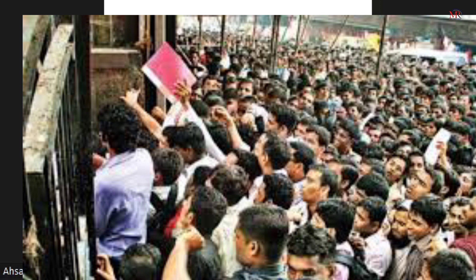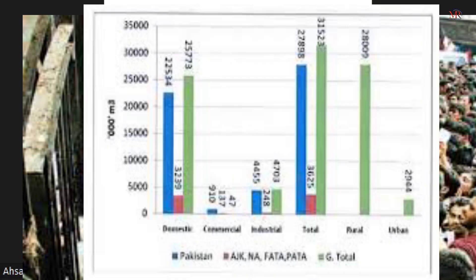Regarding transmission and distribution losses, there are 473 billion in energy transmission losses recorded in 2021. Pakistan has around 500 billion in currency losses from distribution alone.